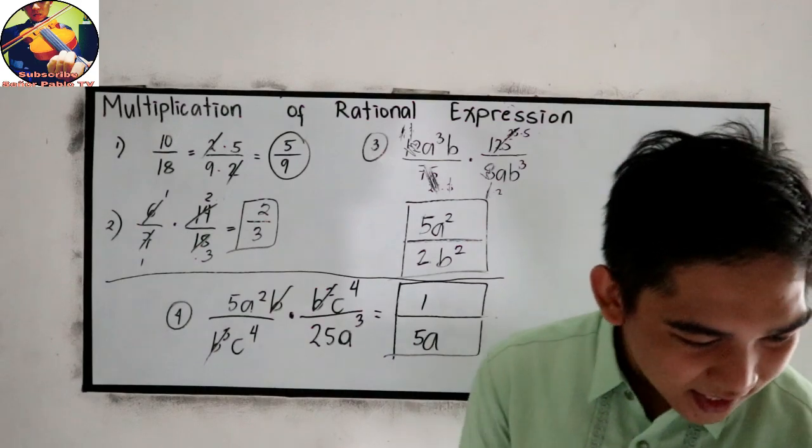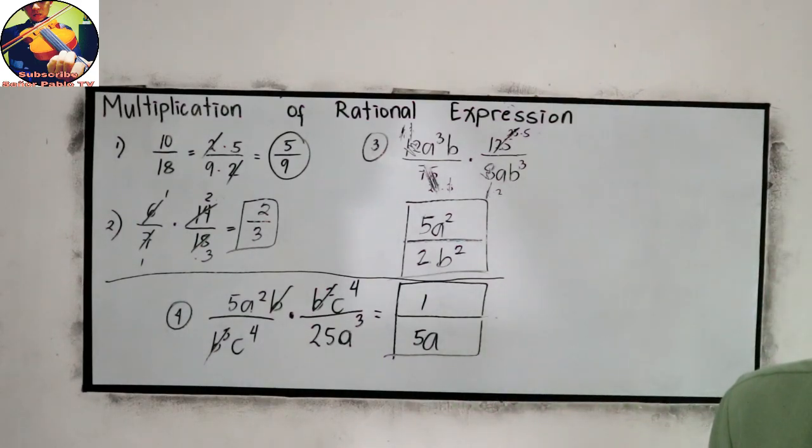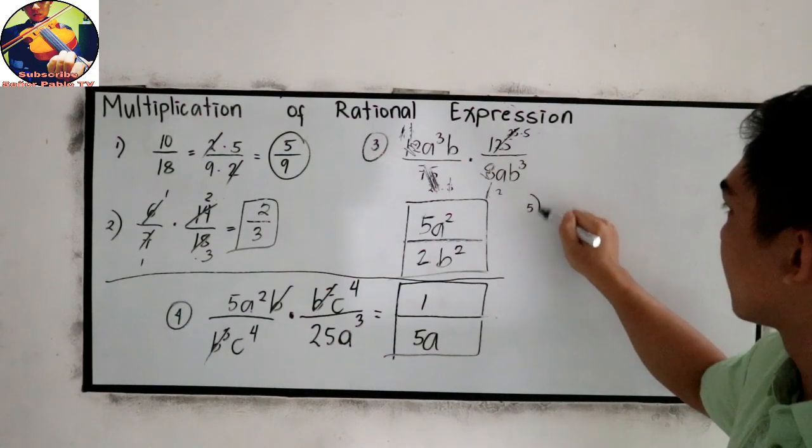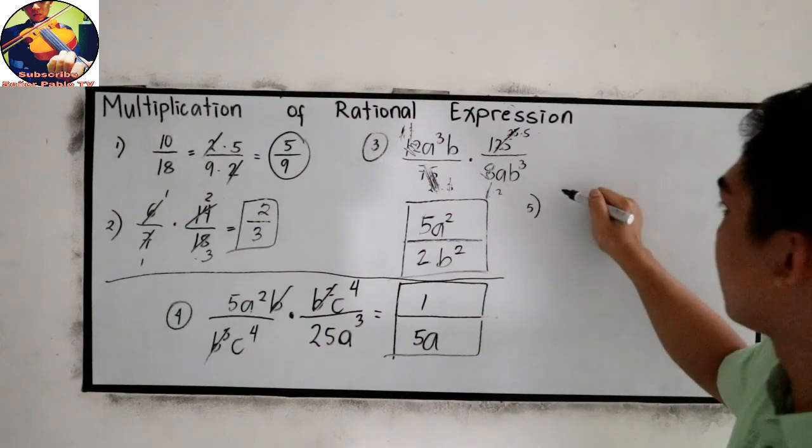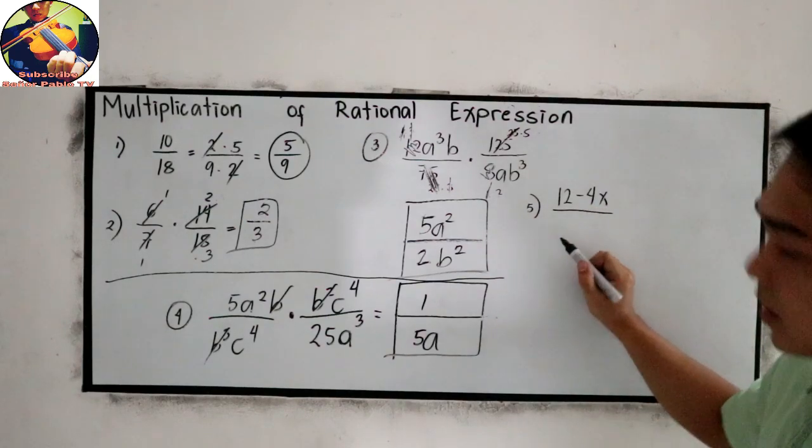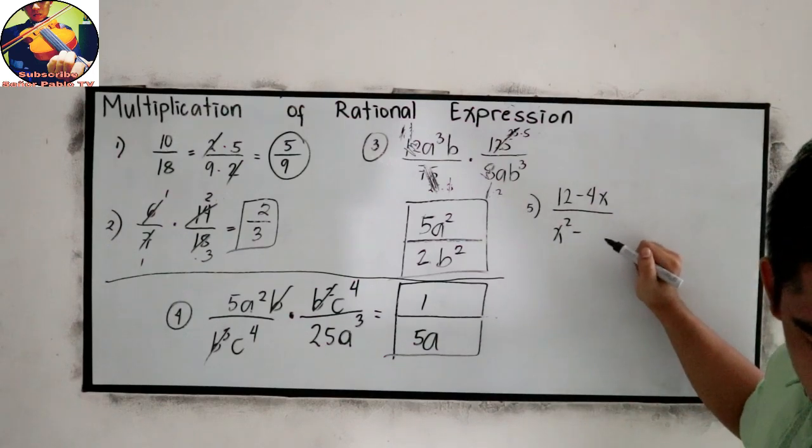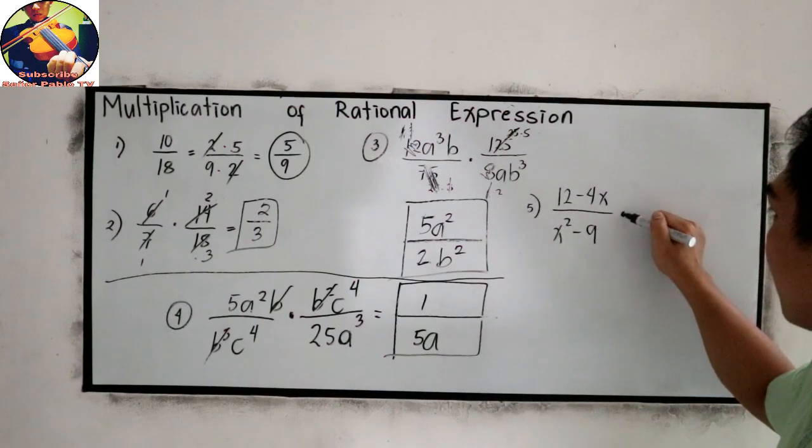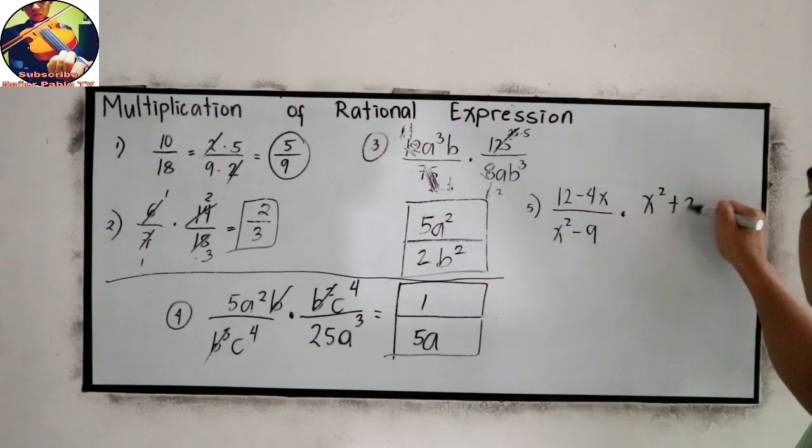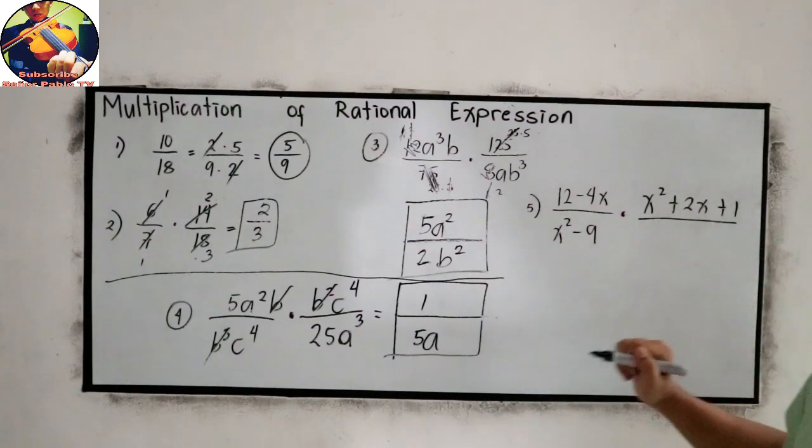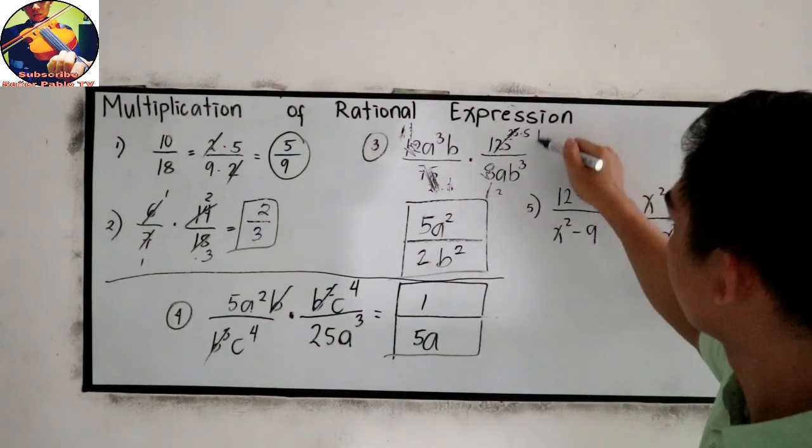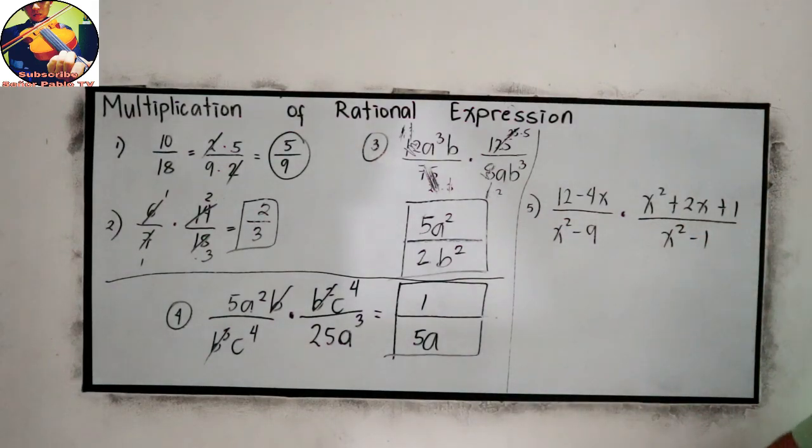Then our last example. Let us try number 5. The problem is 12 minus 4X all over x squared minus 9 times x squared plus 2X plus 1 all over x squared minus 1.